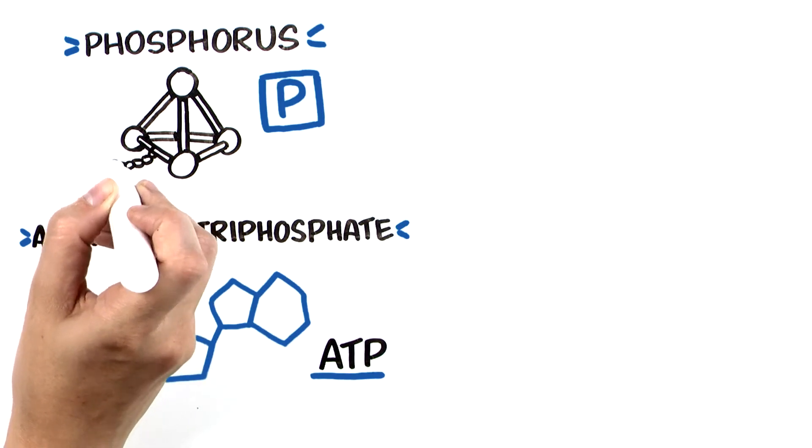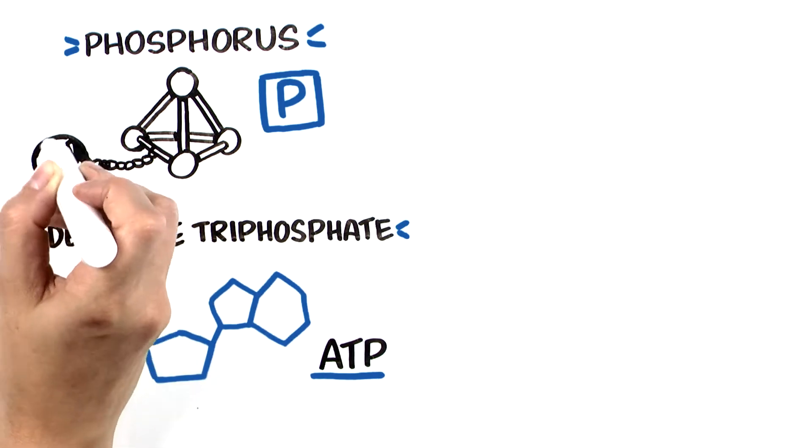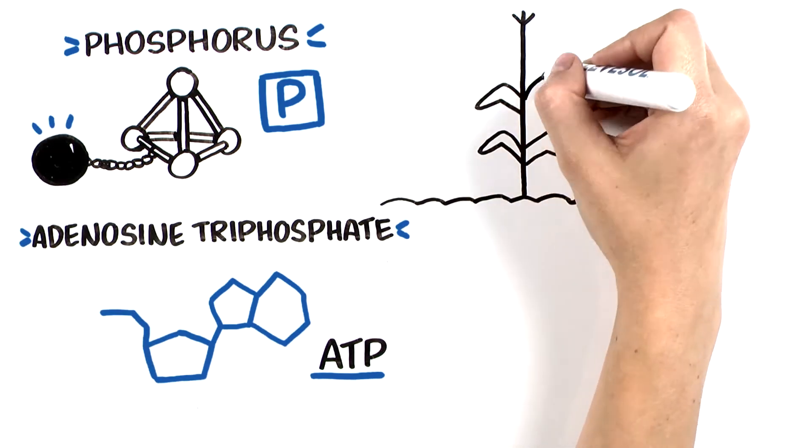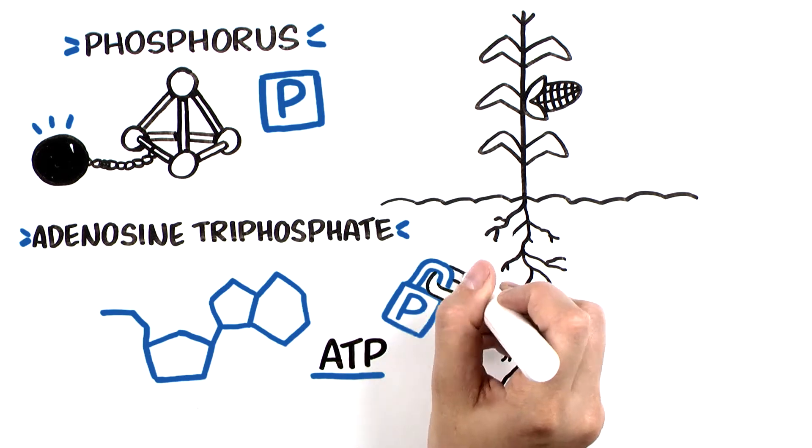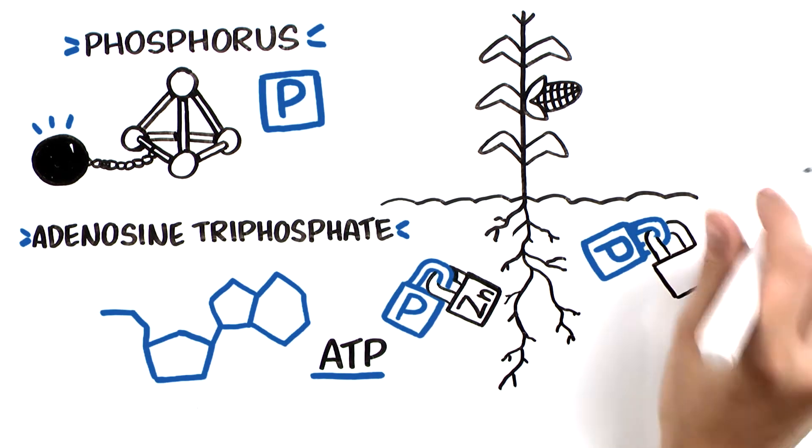Unlike nitrogen, phosphorus has extremely limited soil mobility, causing it to consistently get tied up in the soil. The vast majority of the phosphorus you apply may not be available to be utilized.